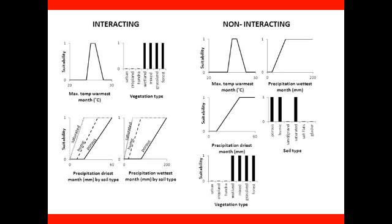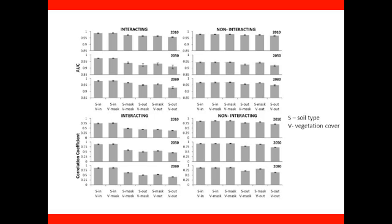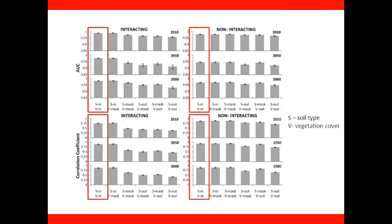After generating the true suitability functions for each of our simulated species, we sampled the habitat maps to generate random samples of occurrences. We then constructed models from the sampled occurrence locations using the program MAXENT. We then projected the models to future climate predictions. We compared the discrimination ability of the model habitat by calculating the area under the receiver operator characteristic curve or AUC value. As a measure of model calibration, we calculated the correlation coefficient between modeled and true habitat suitability maps for each time step.